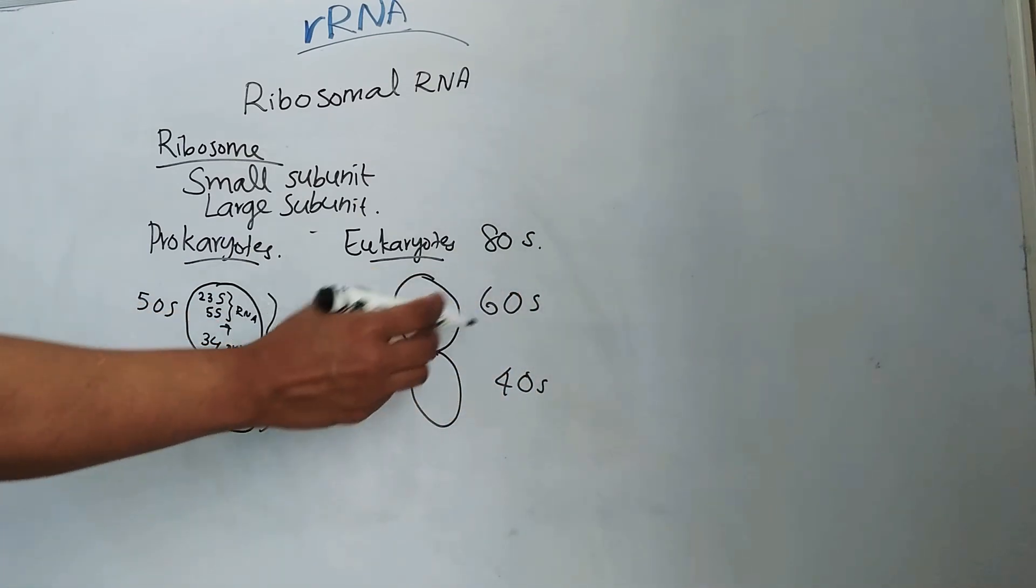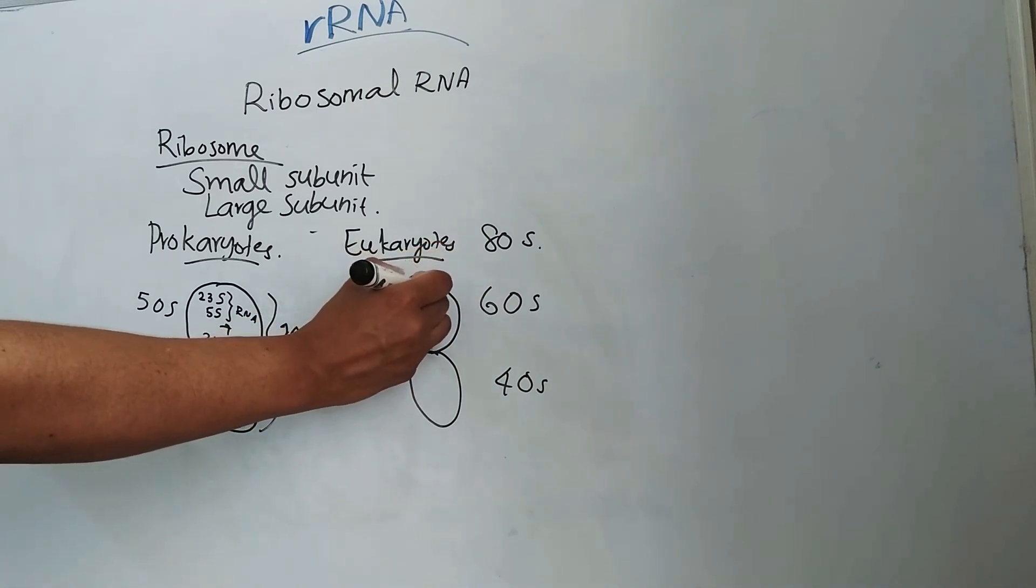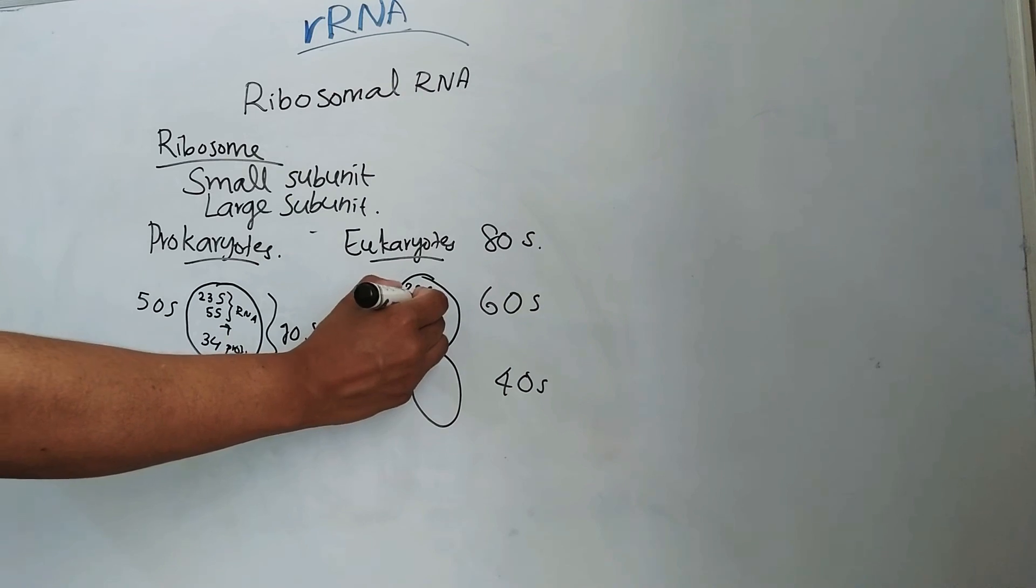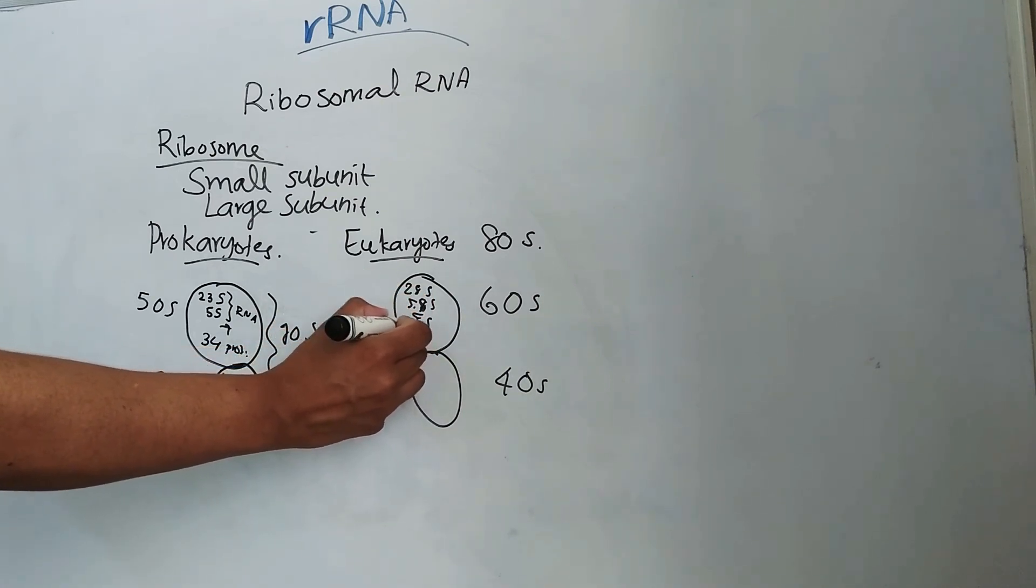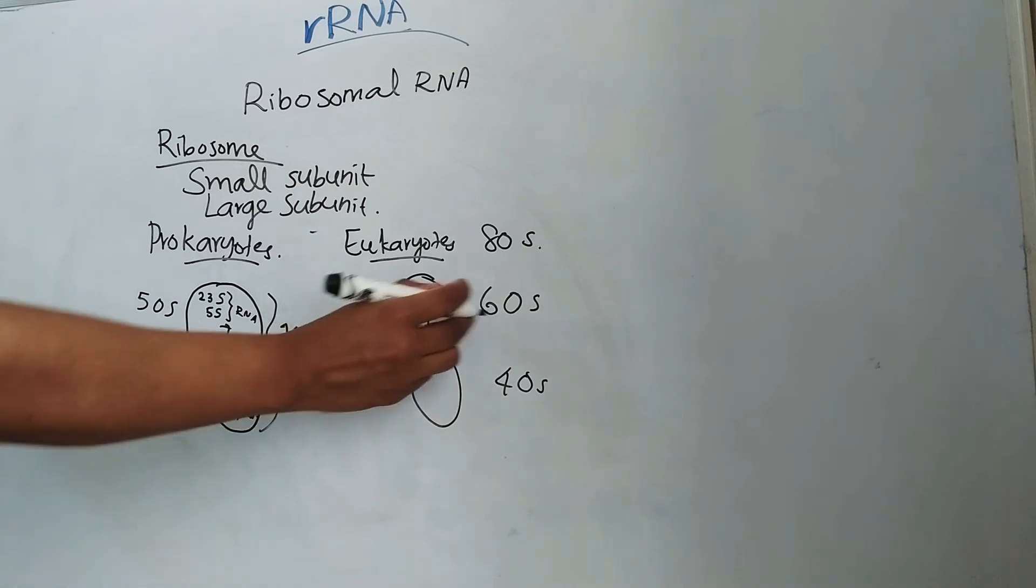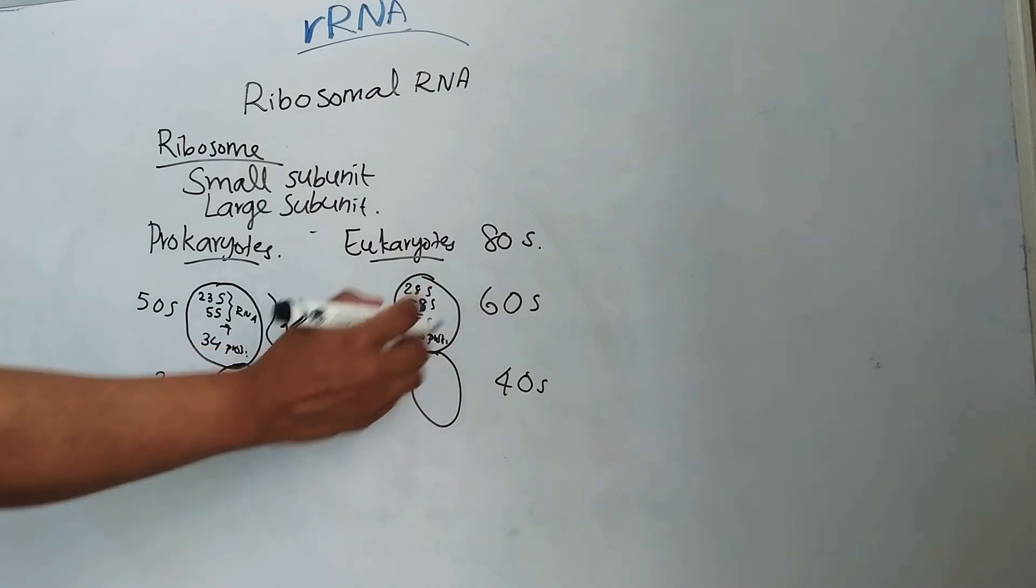And this larger subunit, that is 60S, is made up of 28S, 5.8S and 5S RNA, and 40 proteins. That is 60S subunit.